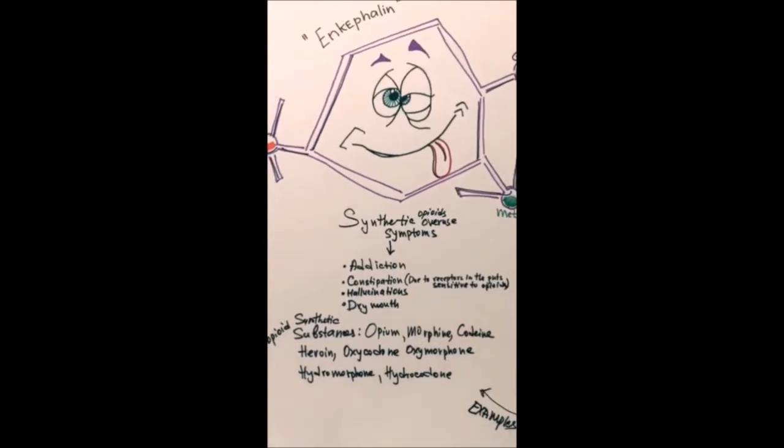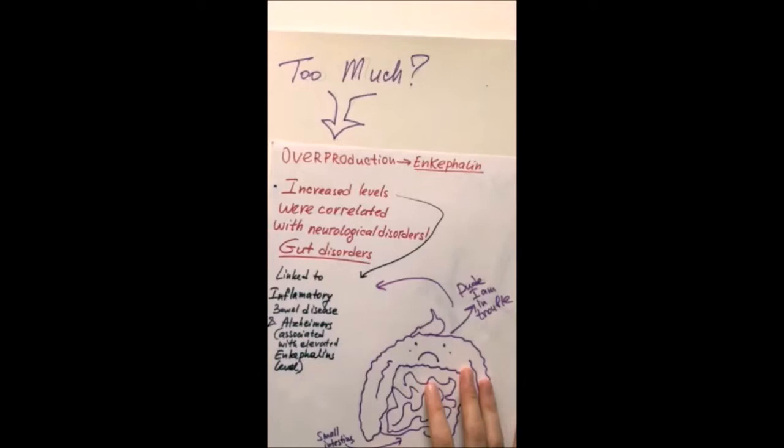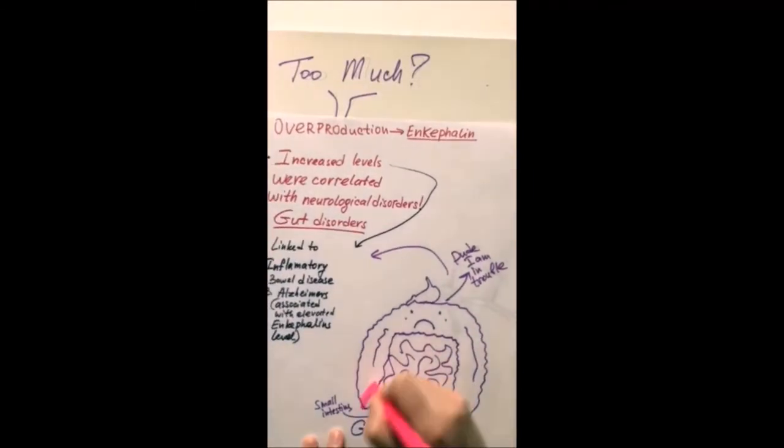Let's imagine for a second that you've got too much of me. Overproduction of enkephalin can cause intestinal distress because they have opioid receptors that bind with me as well.